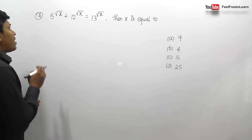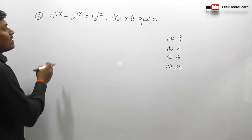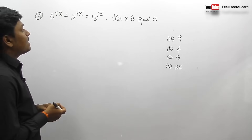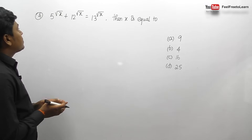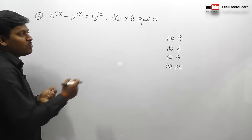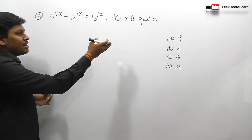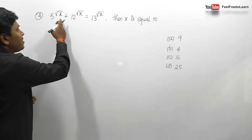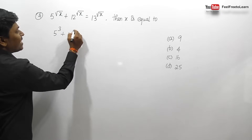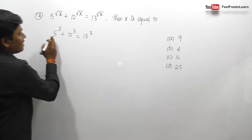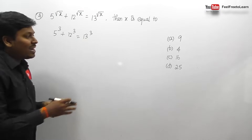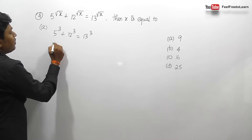Question number 4: if 5^√x + 12^√x equals 13^√x, find x. This question is best solved by substituting the option values. Trying option A (x=9): √9 equals 3, so we get 5³ + 12³ equals 13³, that is 125 + 1728 equals 2197.